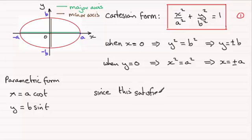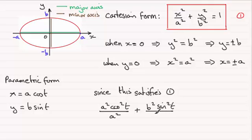Basic trigonometry. So you should be able to substitute these values into here. And for x squared you've got a squared cosine squared t, and that's all divided by a squared. And then you've got plus y squared which is b squared sine squared t, and that's all divided by b squared.